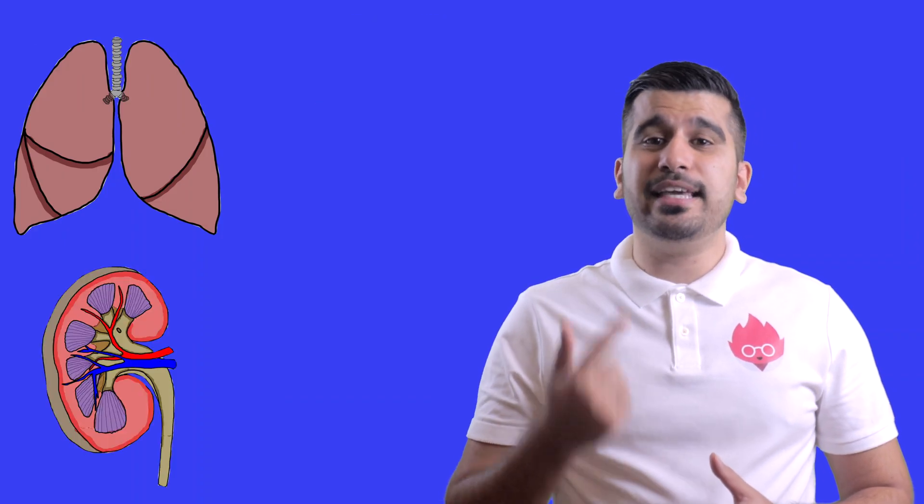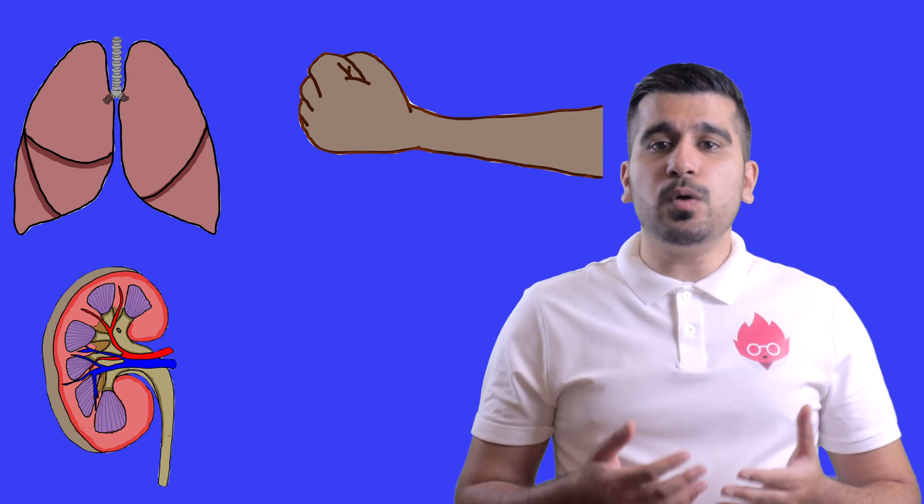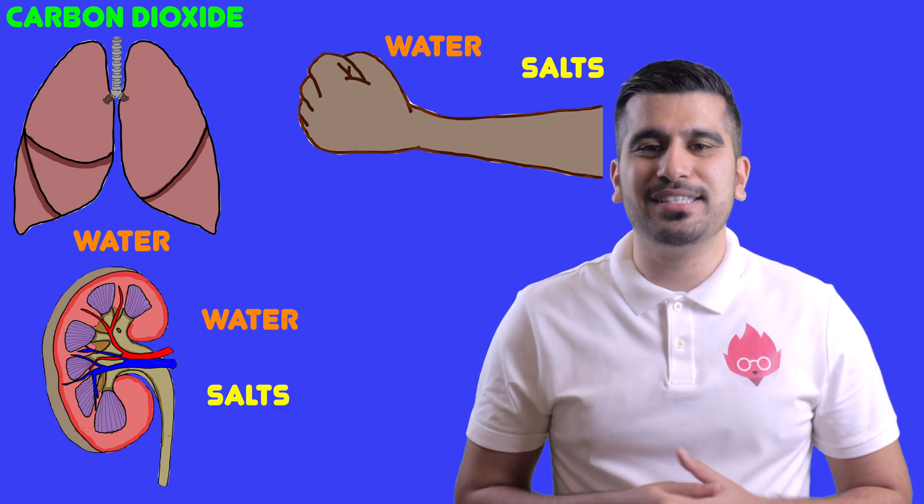In animals there are three main excretory organs. These are the lungs, the kidneys and the skin. They secrete salt, water, carbon dioxide and urea.